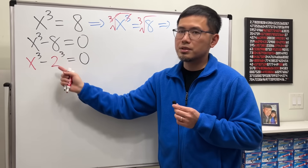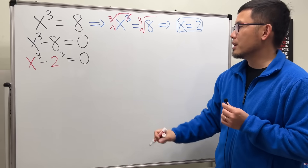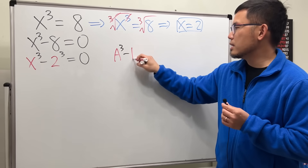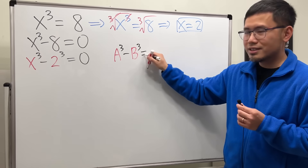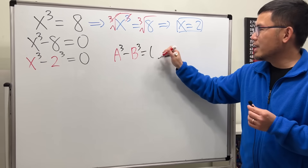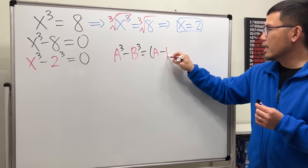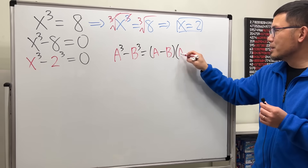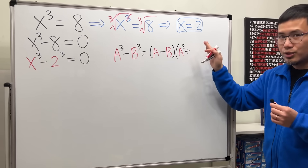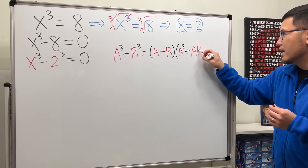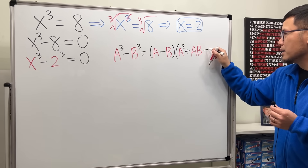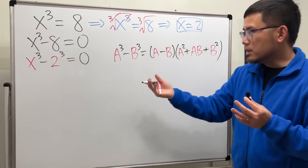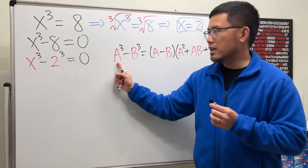The difference of cubes formula is: a cubed minus b cubed equals a minus b, times a squared plus ab plus b squared.